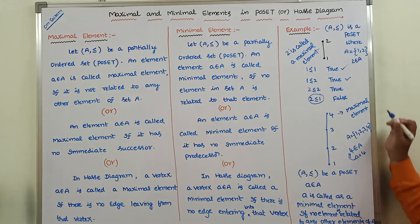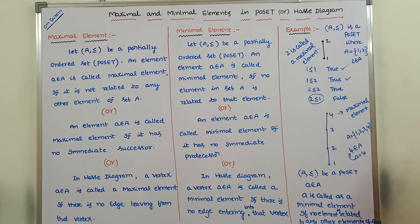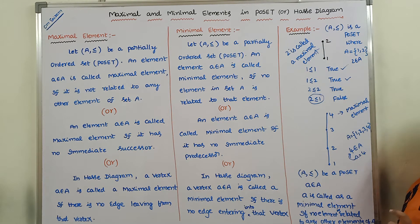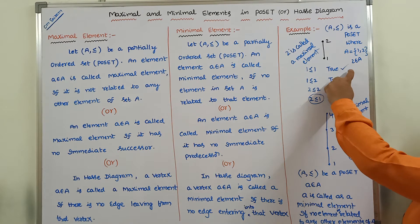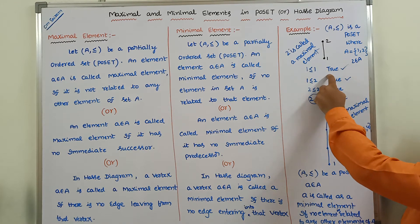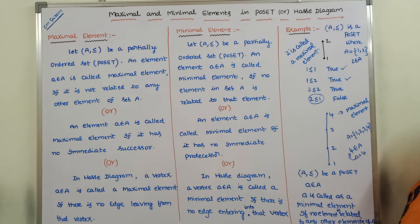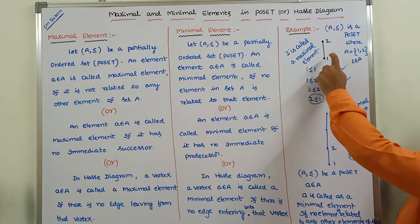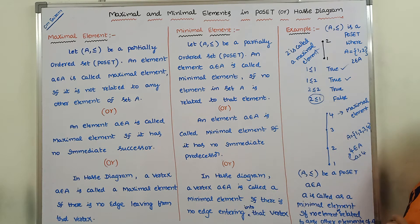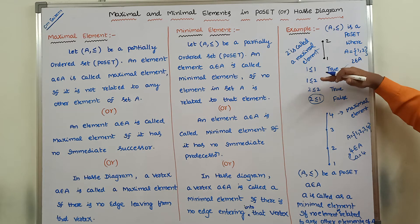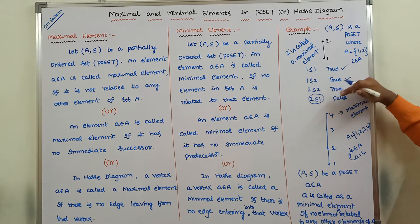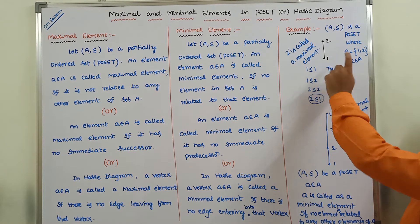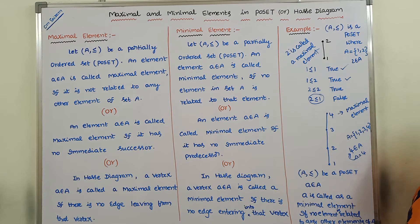Consider this example. In this example, 1 is related with 2, that means 1 ≤ 2. But no element is there that has a relation with element 1. No element is related with element 1, because in the downward direction, no element is there to relate with element 1. So, 1 is called a minimal element.